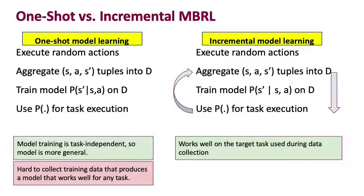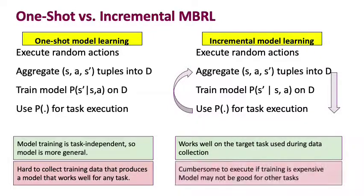And doing this is great because the target task is taken into account as you're collecting data. And so it's obviously going to work well on that target task, much better than the one-shot model learning approach. The flip side of this is that if model training is expensive, for example if you're training a deep neural network, this will be cumbersome to do. It takes a lot of computation. And of course, by specializing the model for the task that you want to execute, you're automatically also giving up the ability for that model to work well on other tasks, potentially.